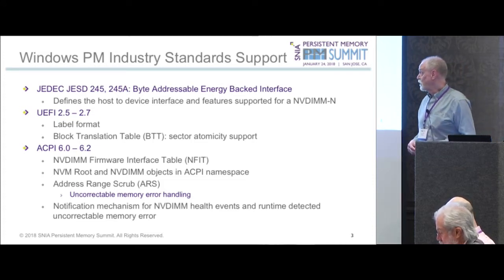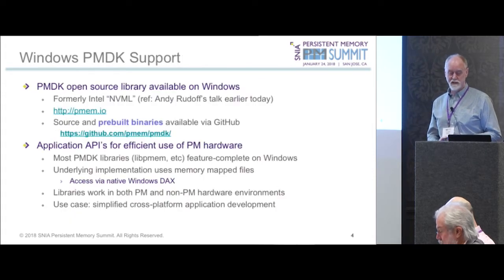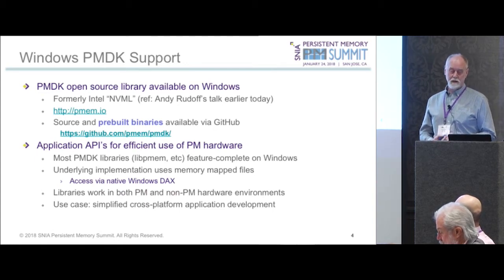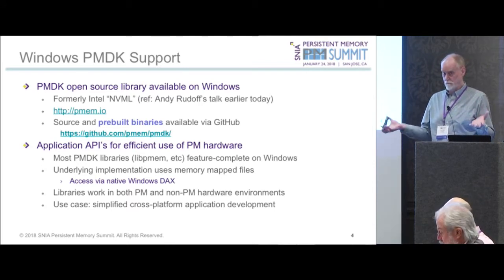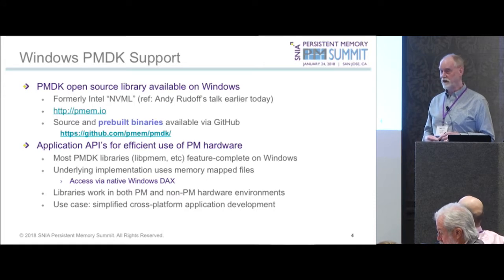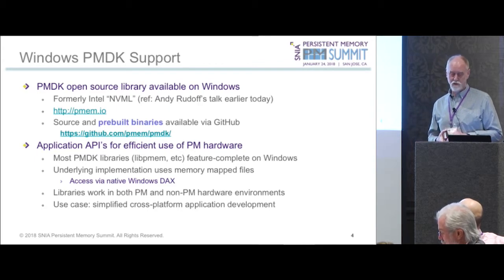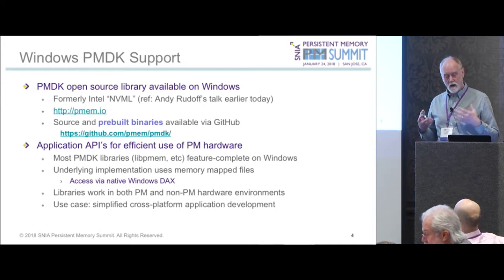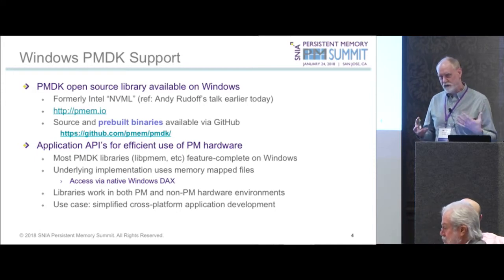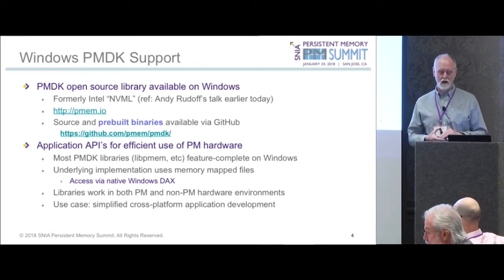Another really important thing we support is APIs. I want to mention the Windows PMDK that Andy mentioned — formerly known as NVML — hosted at PMM.io. The source and pre-built binaries for Windows and Linux are available online today. You can go use them today, just follow that link to the pre-built binaries and find the Windows pre-built stuff. These libraries are optimized for efficient use of PM hardware on Windows — they call native Windows APIs in the Windows-specific version.